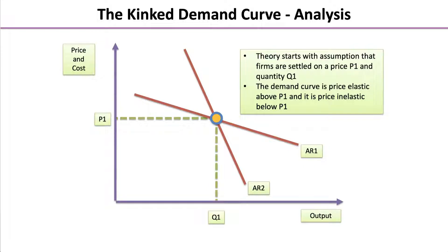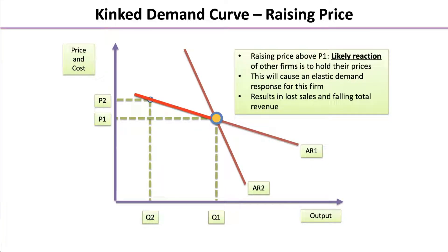The theory starts with the assumption that firms are settled on price P1 and quantity Q1. The demand curve is price elastic above P1 and price inelastic below P1. If the firm chooses to raise prices above P1, the likely reaction of other firms is to hold their prices, causing an elastic response for this firm and ultimately resulting in lost sales and falling total revenue.